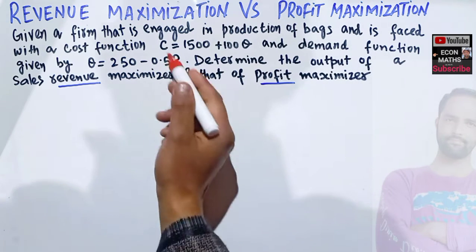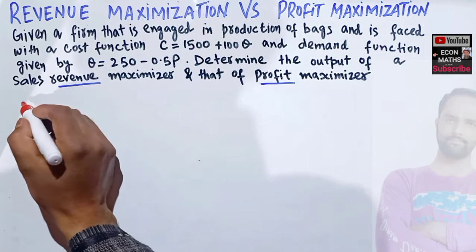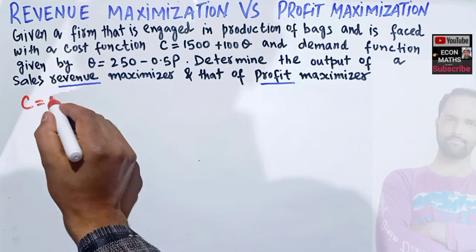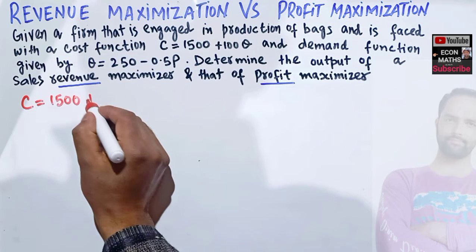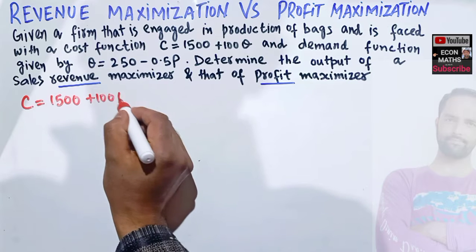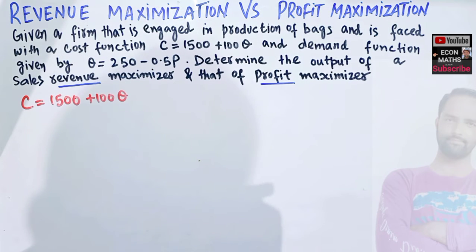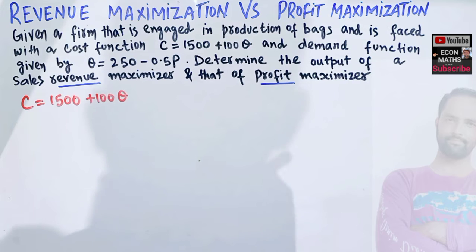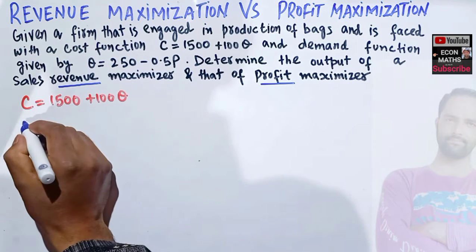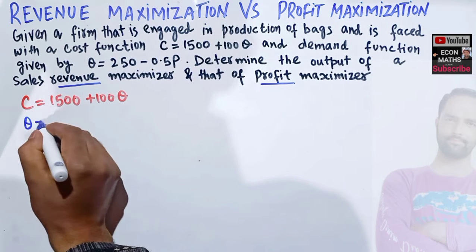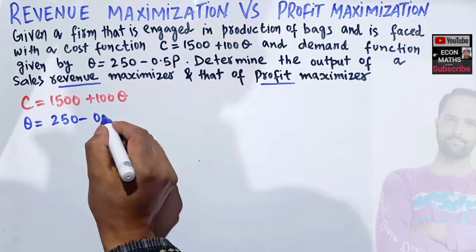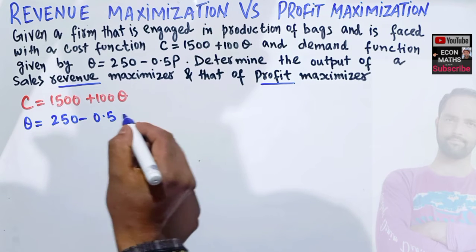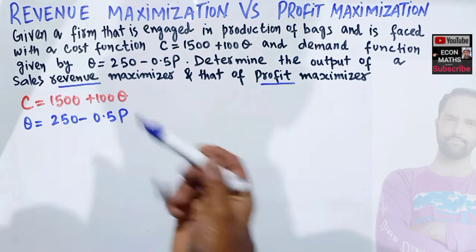We are given the cost function: C = 1500 + 100q, and the demand function: q = 250 − 0.5p, where p denotes price and q denotes output.